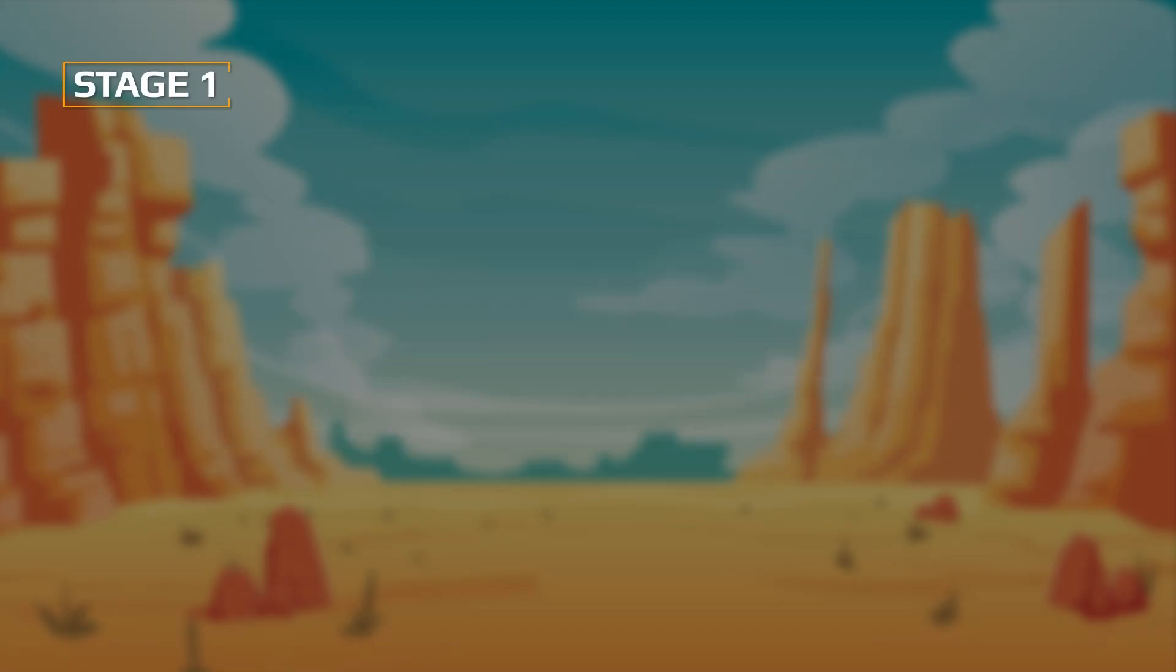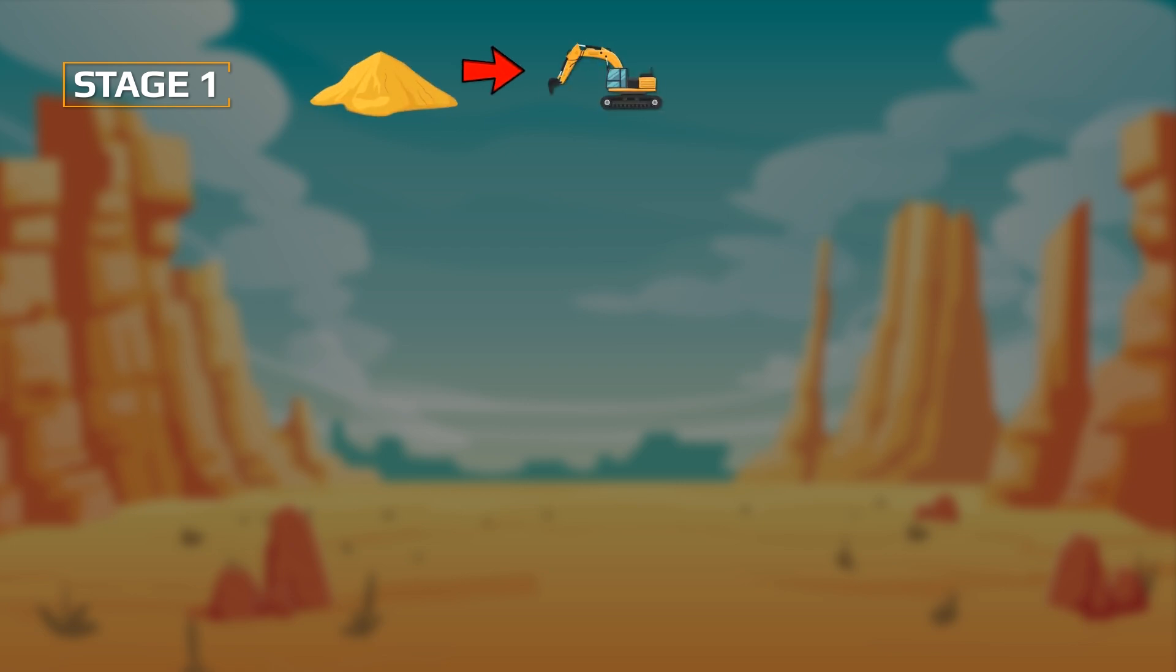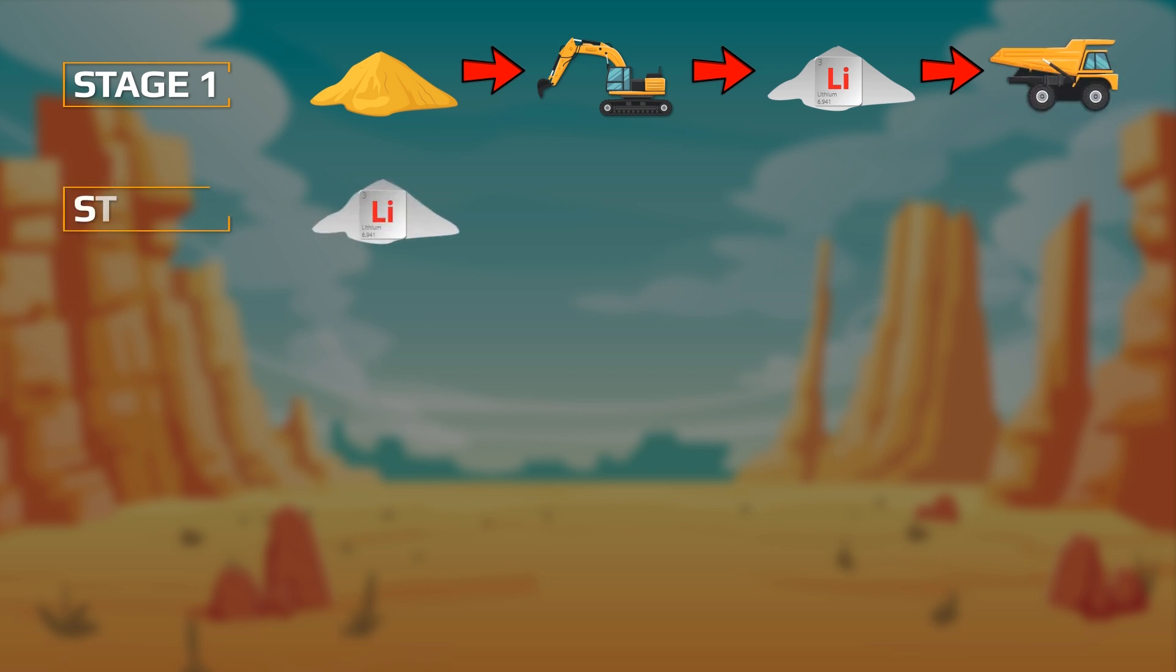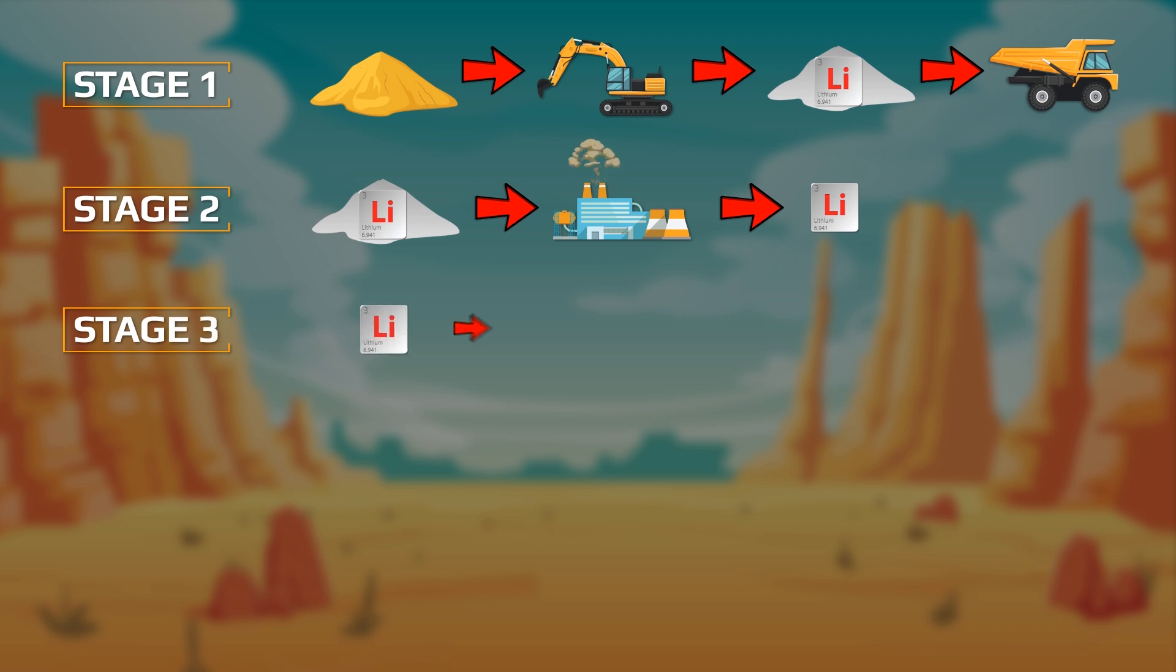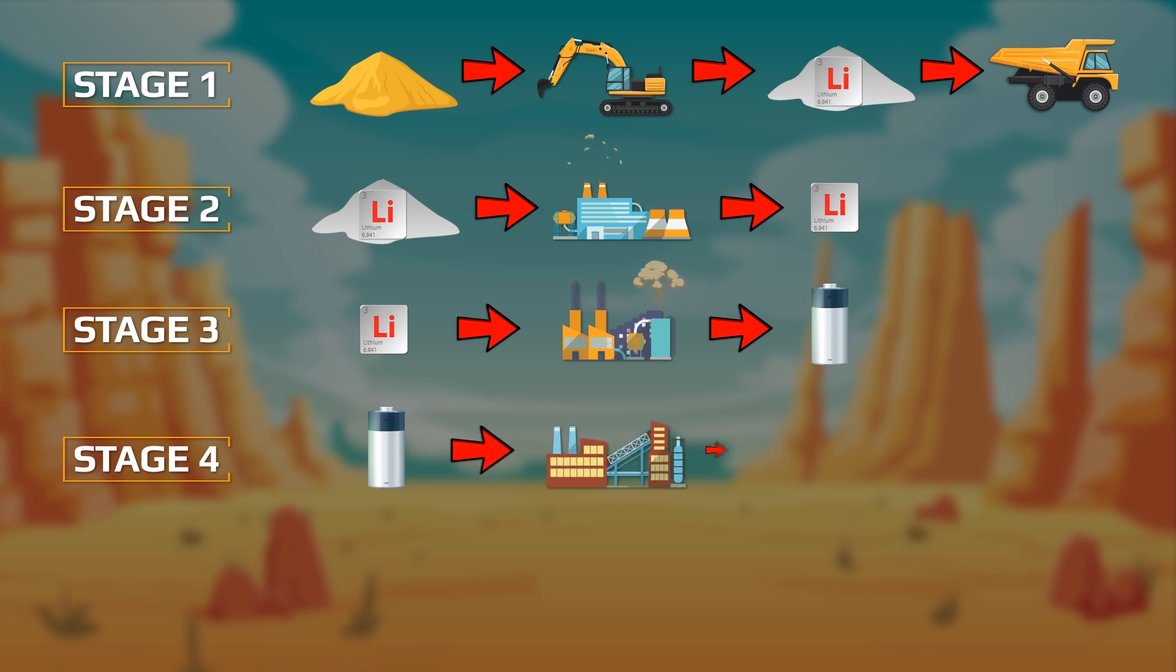Lithium extraction and processing process in general looks like this: Stage 1 - extraction of ore with lithium content using mine or quarry method, lithium concentrate is extracted from the ore. Stage 2 - production process at a chemical plant from lithium carbonate concentrate or lithium hydroxide. Stage 3 - cathode production for batteries at factories. Stage 4 - battery production at factories. Stage 5 - electric vehicle production.